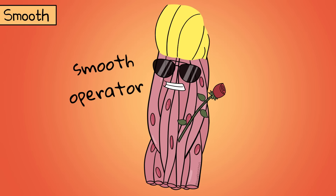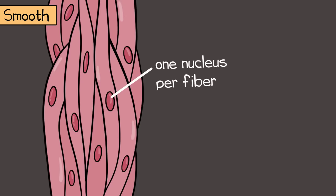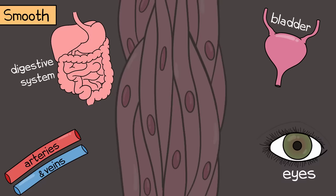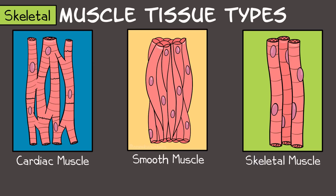Smooth muscle tissue — it's smooth, really just meaning it doesn't have striations or stripes. Each fiber has one nucleus, and each fiber is spindle-shaped, meaning they are wide in the middle and then taper off at both ends. You'll find them in the digestive system, in arteries and veins, in the bladder, and in the eyes changing the iris size. They're also involuntary.